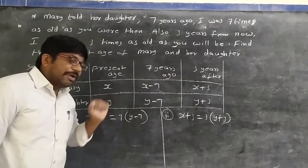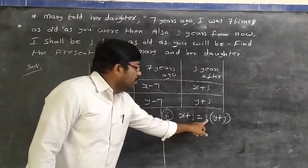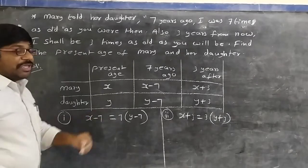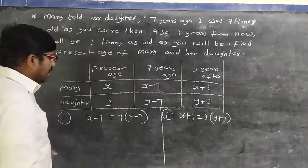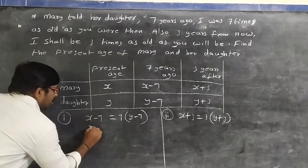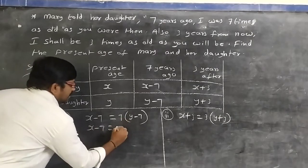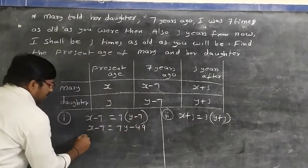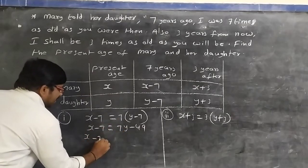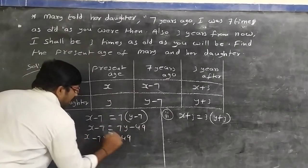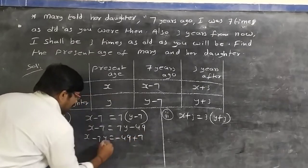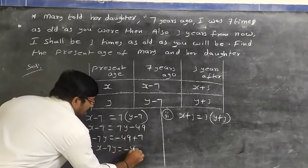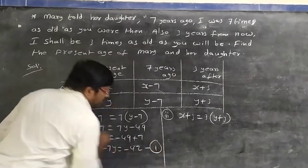Expanding equation 1: x − 7 = 7y − 49, so x − 7y = −49 + 7 = −42. That is equation 1: x − 7y = −42. Expanding equation 2: x + 3 = 3y + 9, so x − 3y = 9 − 3 = 6. That is equation 2: x − 3y = 6.